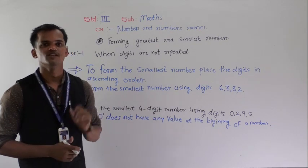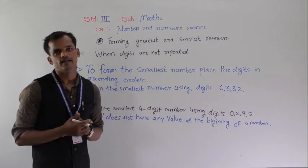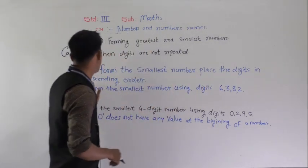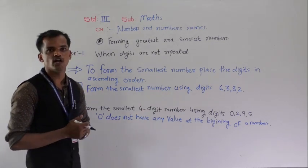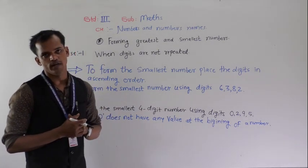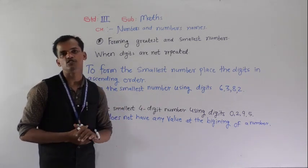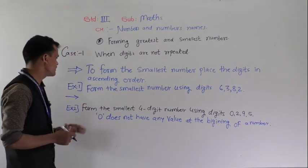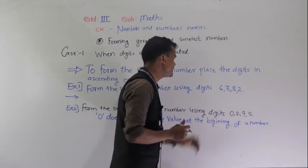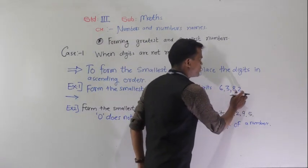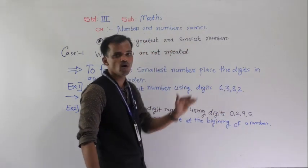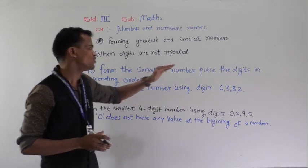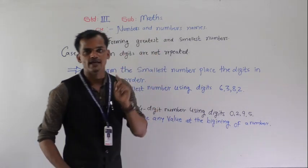Now we will see how to form the smallest 4-digit number by given digits. To form the smallest number, place the digits into ascending order — ascending order means small to big order. Example: form the smallest number using the digits 6, 3, 8 and 2. By using these digits we have to form the smallest 4-digit number, so arrange the digits into ascending order.